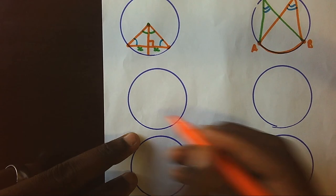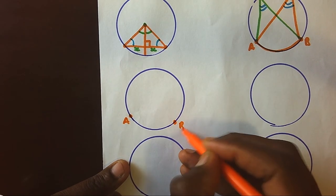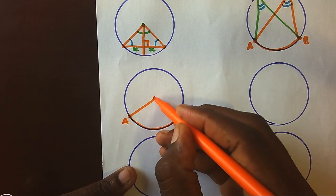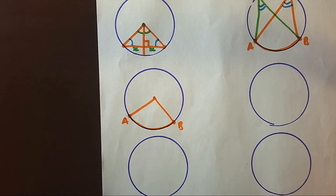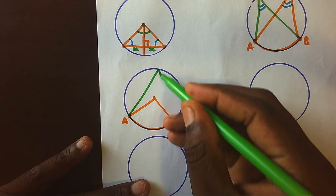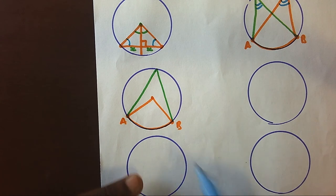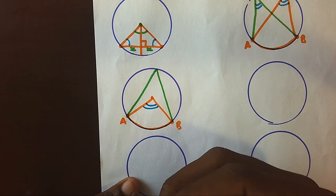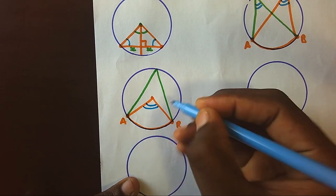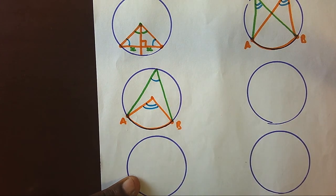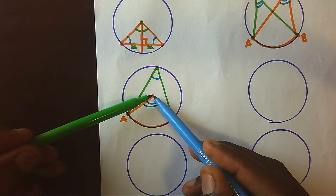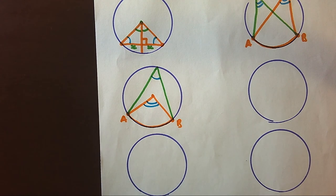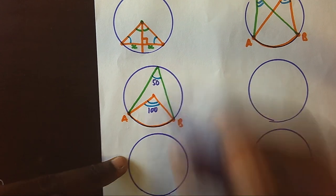If two points represent an arc and can form an angle at the center, and also the same points can form an angle at the circumference, the law tells us that the angle subtended at the center will always be twice bigger than the angle subtended at the circumference. So if you have 100 degrees at the center, you shall have 50 degrees at the circumference.